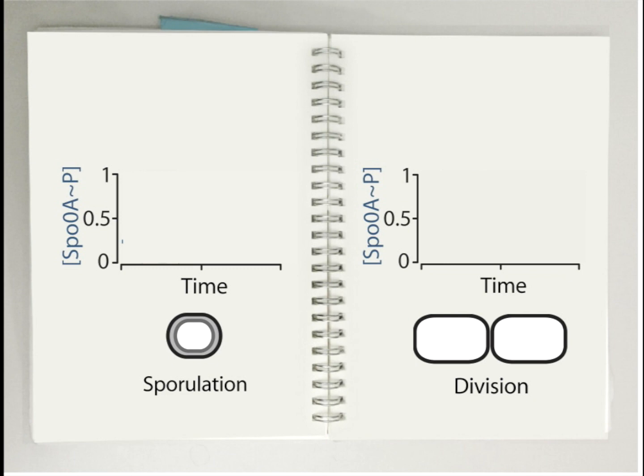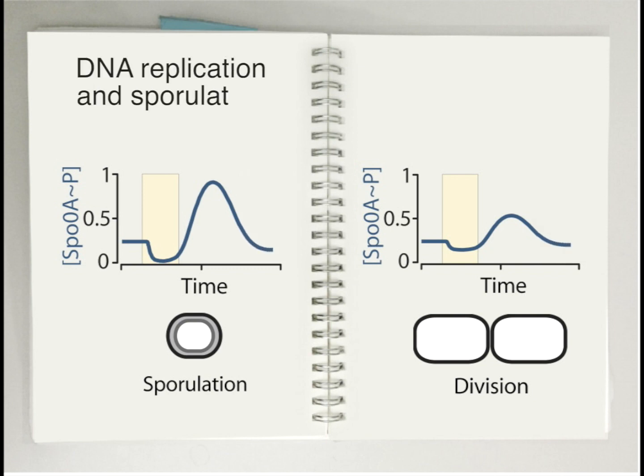In this way, during each cell cycle, completion of DNA replication triggers a pulse of Spo0A activity, and coordination of sporulation and the cell cycle is always achieved.